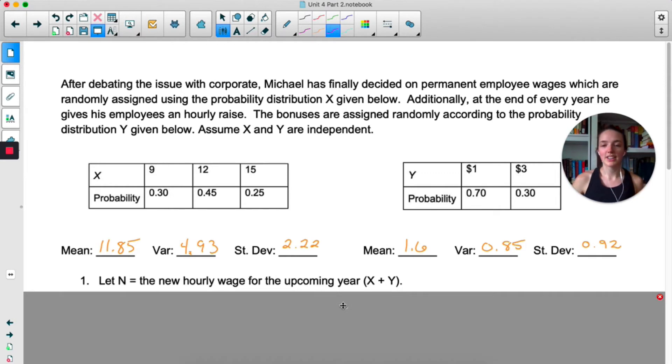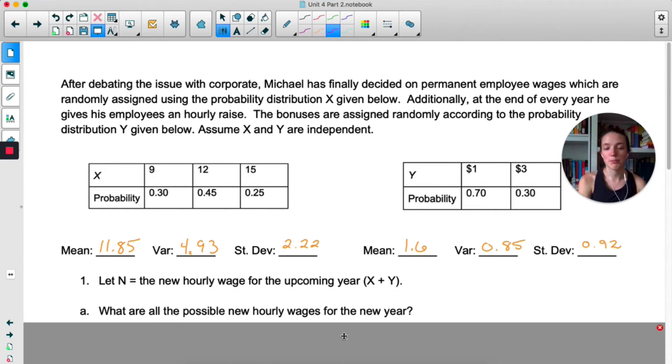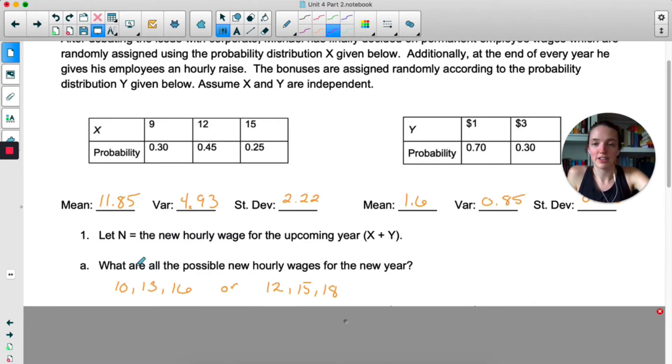Okay, we're going to let N be the new hourly wage for the upcoming year, so N is just whatever the person gets for X plus whatever the person gets for Y added together. So the first question is what are all the possible new hourly wages. Take a moment, list those. There's going to be six. So if they get the one dollar bonus they're either making 10, 13, or 16. I just added one to all these. If they're getting the three dollar bonus they'll either start making 12, 15, or 18.